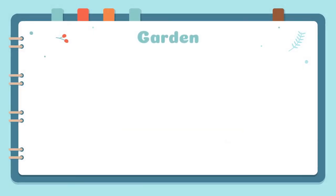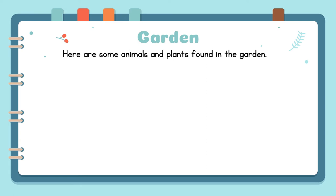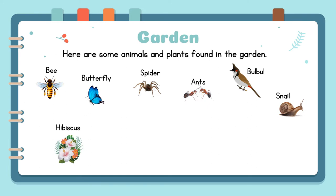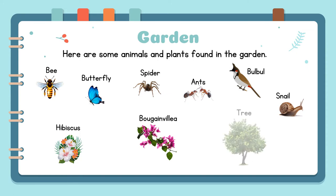Garden. Here are some animals and plants found in the garden: Bees, Butterfly, Spider, Ant, Bulbul, Snail, Hibiscus, and Bougainvillea tree.